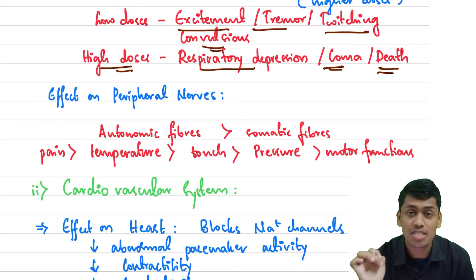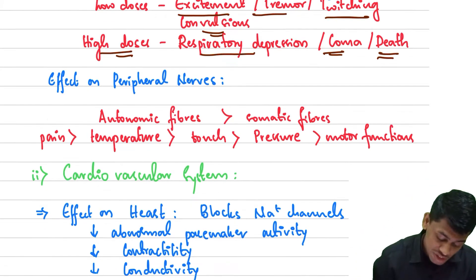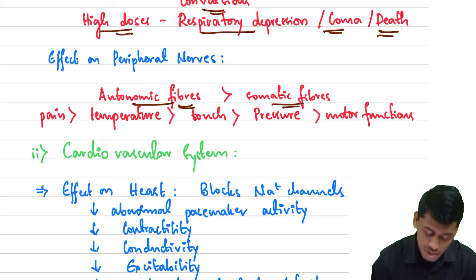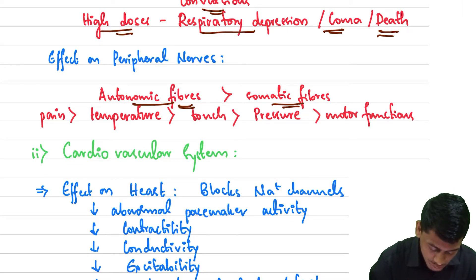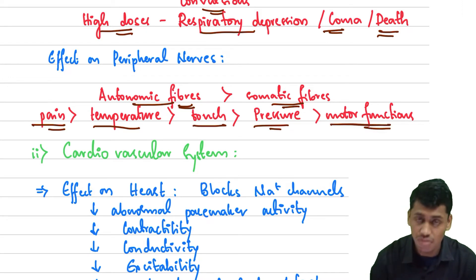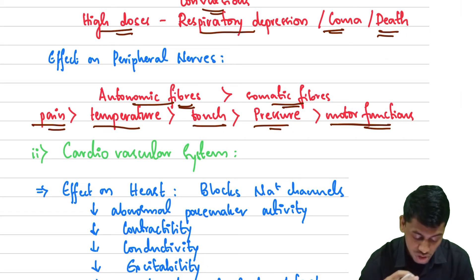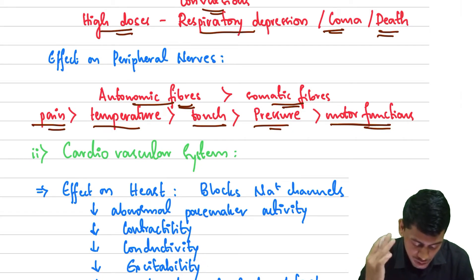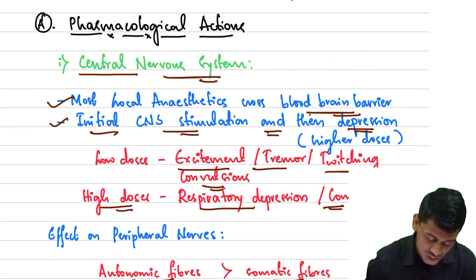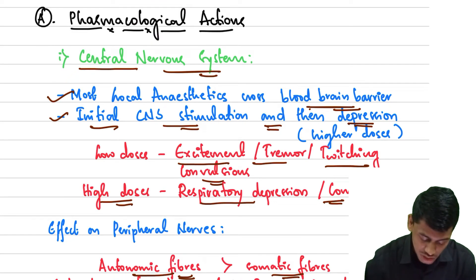The effects of local anesthetics on peripheral nerves: they mainly obtain the function of autonomic fibers more than somatic fibers. Firstly, they cause loss of the sensation of pain — pain goes away first, followed by temperature, then touch, pressure, and finally the motor functions of the given organ.